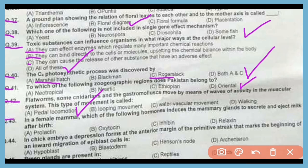Question 43. In female mammals, which of the following hormones induces the mammary gland to secrete and eject milk after birth? The correct answer is option B. Oxytocin is responsible for secretion as well as ejection of milk from the mammary gland.